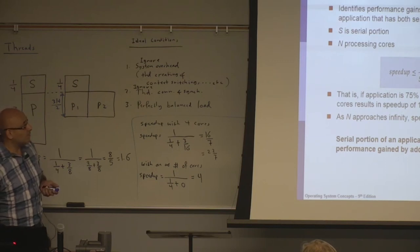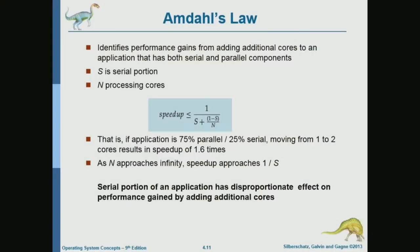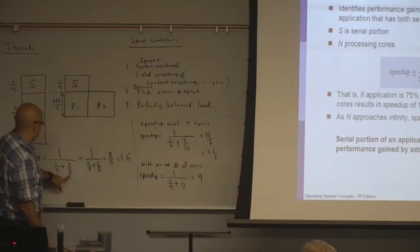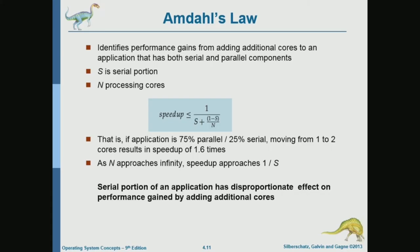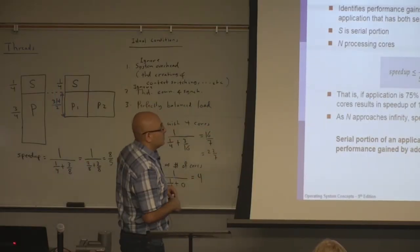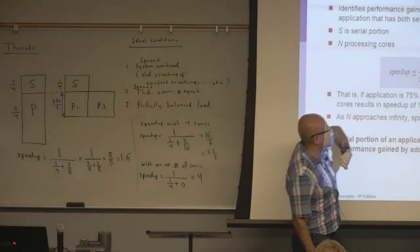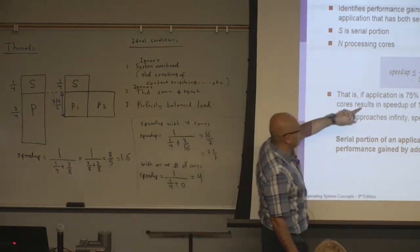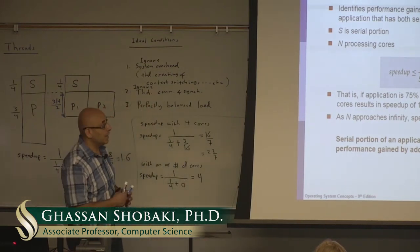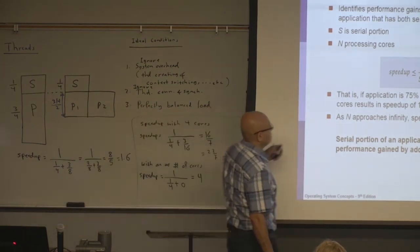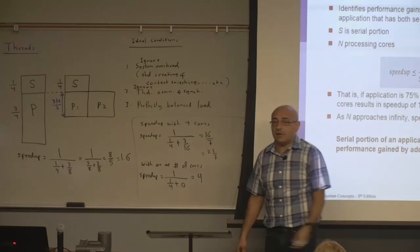The general formula for Amdahl's Law is: speedup equals 1 divided by s plus (1 minus s) divided by n, where s is the sequential fraction and n is the number of cores or threads — ideally assuming each thread runs on a separate core. In this example, s is one quarter. Plugging that in: when n is 2 you get 1.6, when n is 4 you get about 2.3, and when n is infinity you get 4.